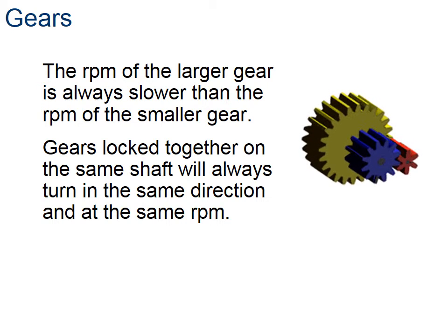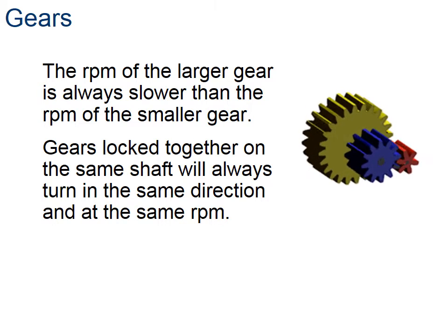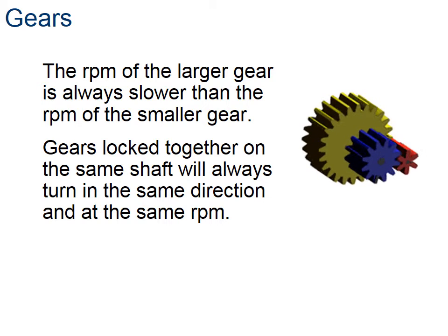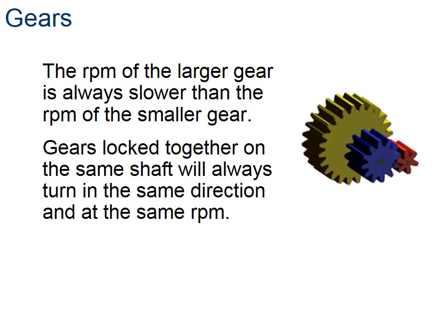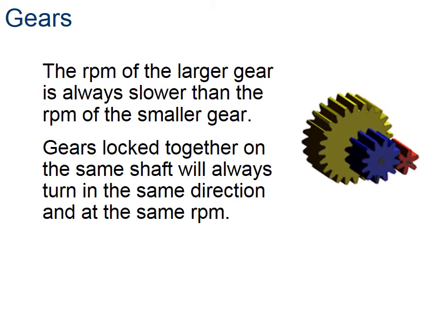So if you look at the green gear and the blue gear, those are on the same shaft. They're always going to turn in the same direction and at the same speed. Another characteristic of gear motion is that the larger gear is always going to have a smaller number of revolutions per minute than a smaller gear. Key points to remember.